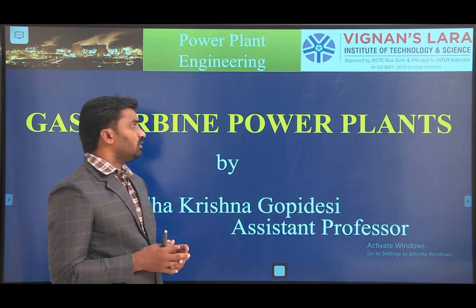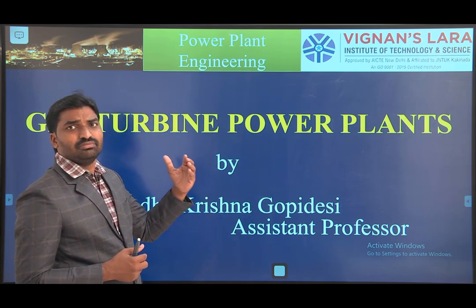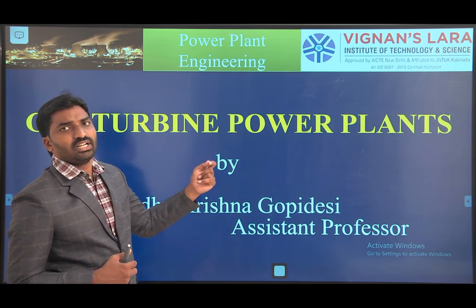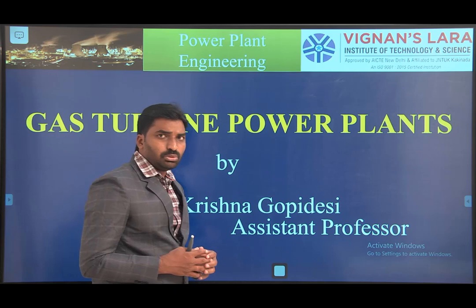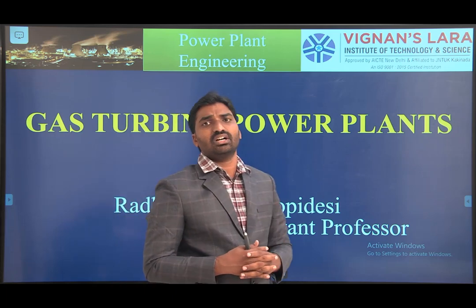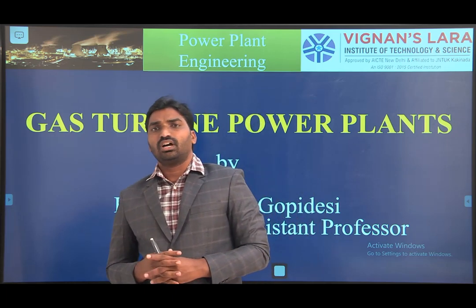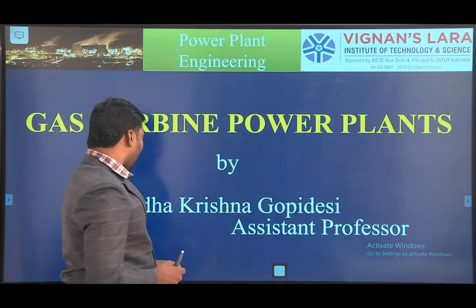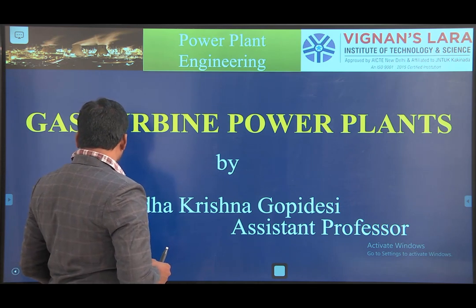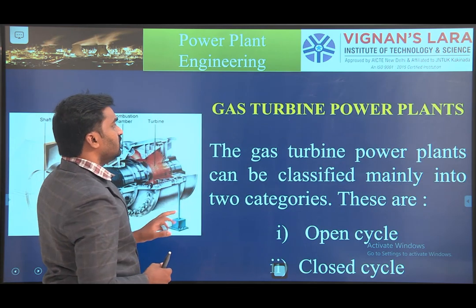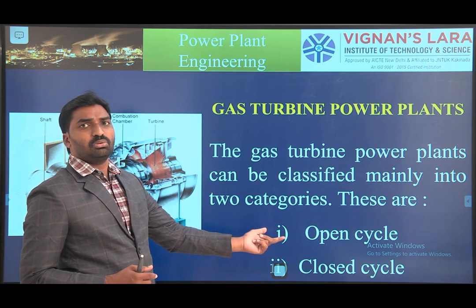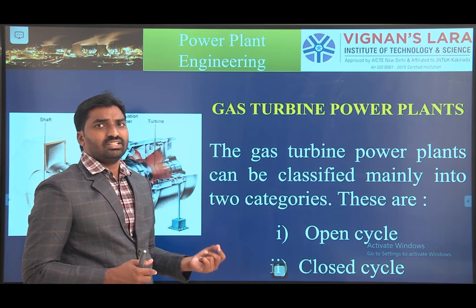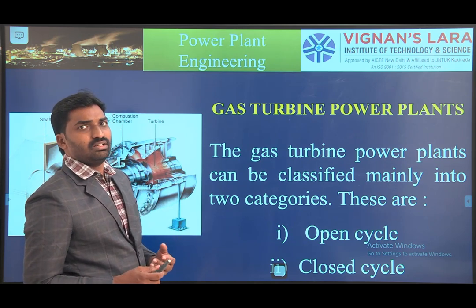Natural gas is generally preferred because of its high octane number. In the last class we discussed the classification of gas turbine power plants. There are mainly two types based on constant pressure and constant volume. Under constant pressure, gas turbine power plants are classified into two types: the open cycle gas turbine power plant and the closed cycle gas turbine power plant.